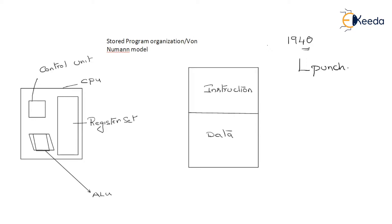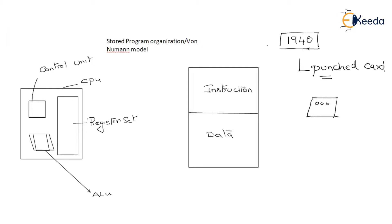There is something called a punched card. A programmer needed to collect a few punched cards on which a pattern of holes would be made. The punched cards stored the programs. A punched card is square-shaped on which you need to make a pattern of holes. This pattern of holes represents an instruction. If you want to write 100 instructions, you need to collect around 100 punched cards.